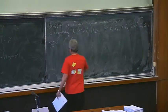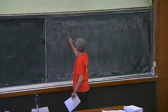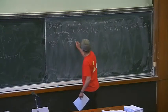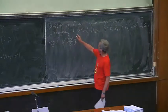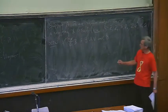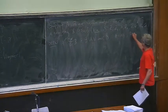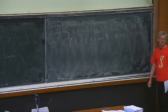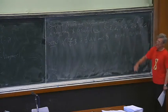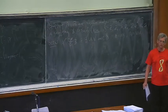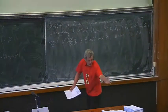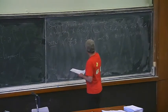First of all comes elementary strong shift equivalence. I'll abbreviate this to ESSE. What does this mean? This holds for these square matrices if there exist matrices U, V over S—meaning with entries in S—such that A equals UV and B equals VU. So something very simple-looking, but it's not as simple as it looks.